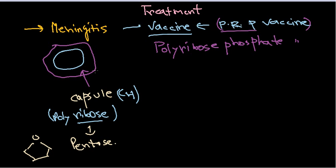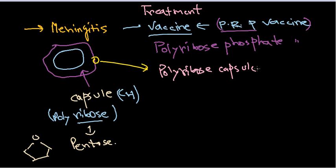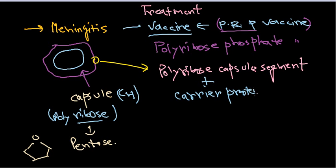For vaccination, we cut out a section of this capsular segment — we take the poly ribose capsule segment and attach it with a carrier protein. This construction of a poly ribose capsule with a carrier protein is what we call the PRP vaccine.